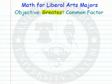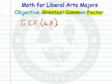In this video, we're going to find the greatest common factor of two numbers. We abbreviate that as GCF. Let's say we want to find the greatest common factor of 6 and 8. So what we'll do is we'll find the largest number that goes into both 6 and 8.